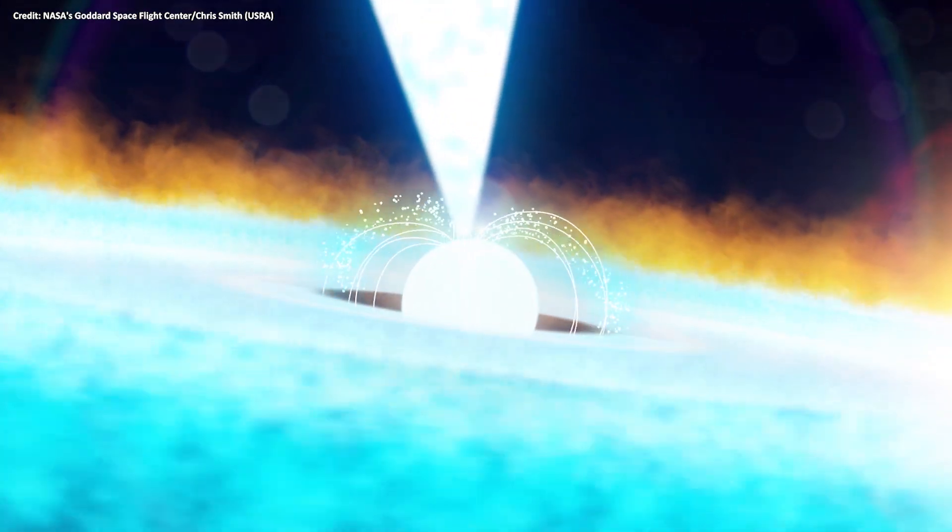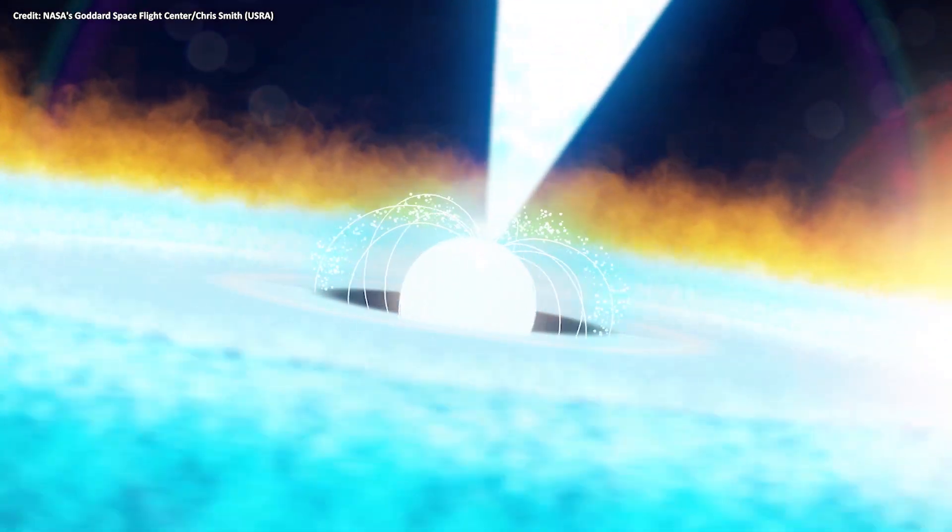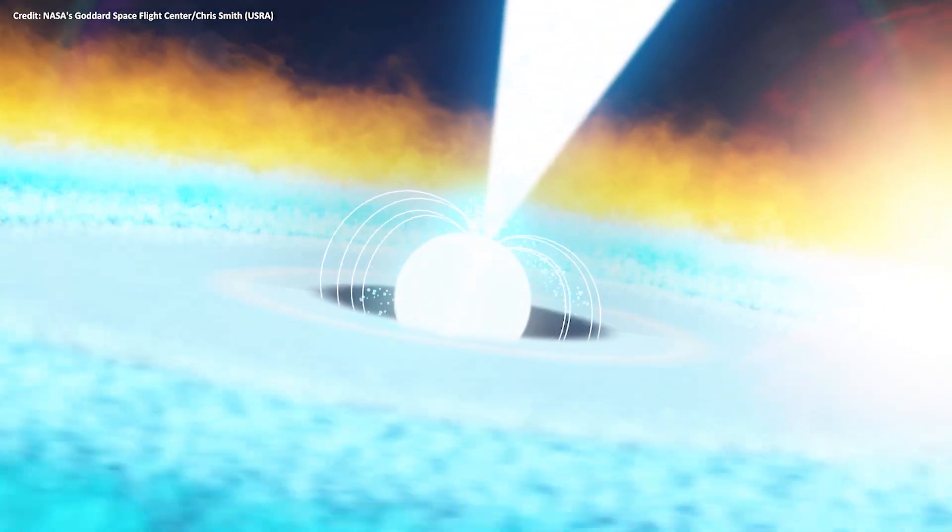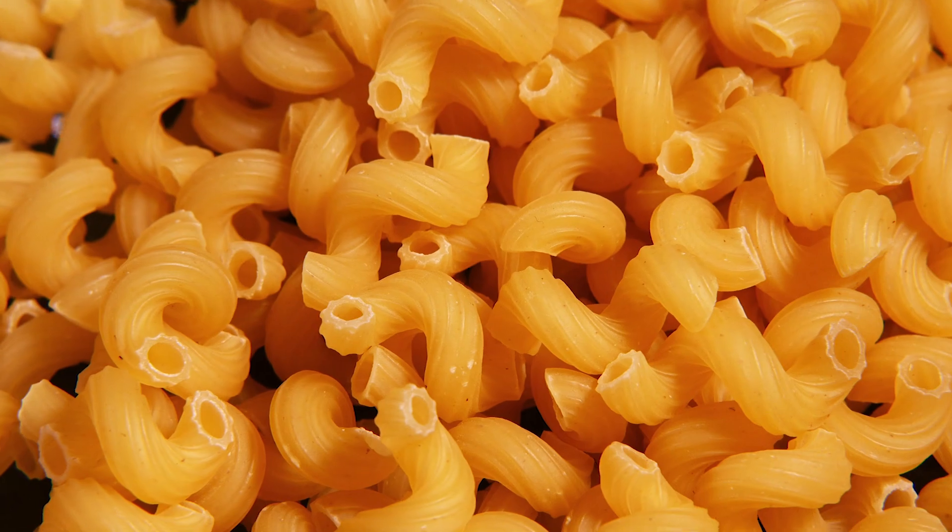Below the surface of a neutron star, protons and neutrons compete and end up forming long cylindrical shapes or flat plains known as nuclear pasta.